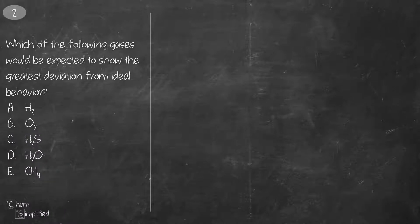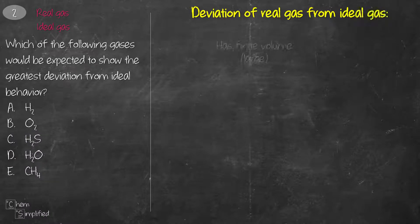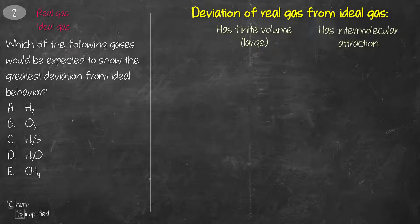This question is testing on real and ideal gas. Real gases deviate from ideal gas because they do have finite volumes and they do attract one another.